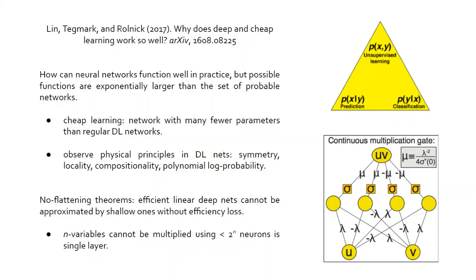There's a paper by Max Tegmark and colleagues. One of his interests is the idea of deep and cheap learning. Deep learning we know; cheap learning is something that allows us to make more use of deep learning networks. They ask: how can neural networks function well in practice? The set of possible functions you might want to use is exponentially larger than the set of probable networks — so neural networks work very well, but if you tried to solve the same problem by brute force it might be nearly impossible.